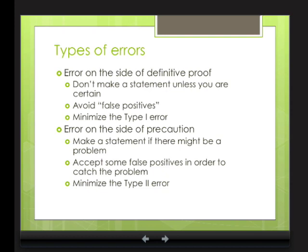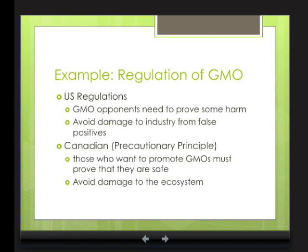Another approach is to err on the side of precaution — making statements when there might be a problem even if you can't prove it to 95% confidence. You're willing to accept some false positives in order to catch the problem early and maybe avoid further problems. As the saying goes, an ounce of prevention is worth a pound of cure. In statistical language, this is minimizing the Type 2 error.